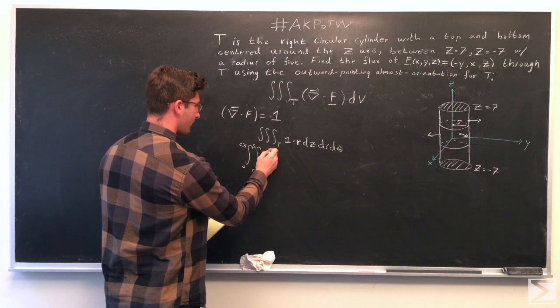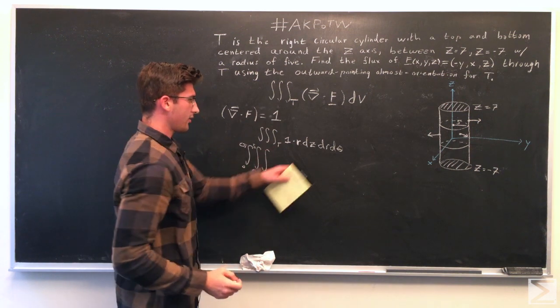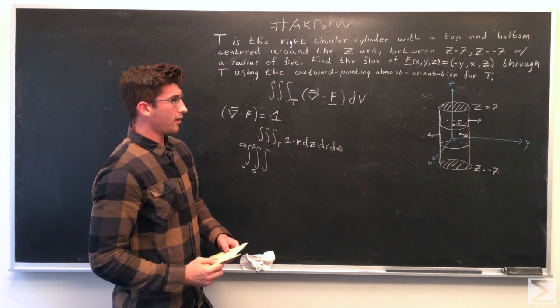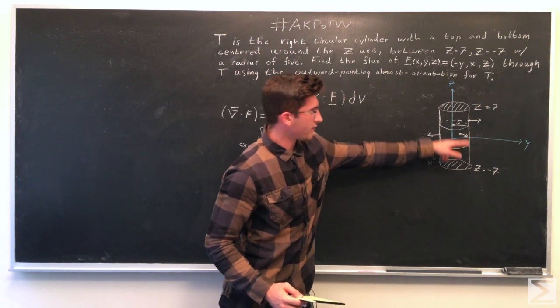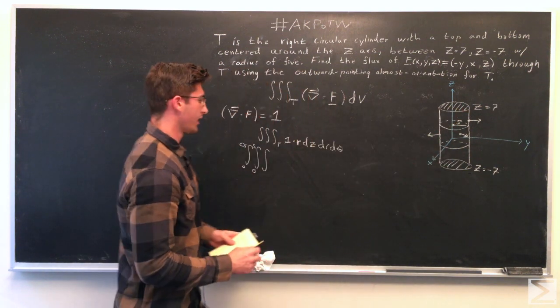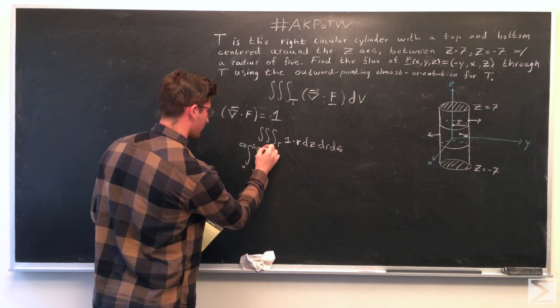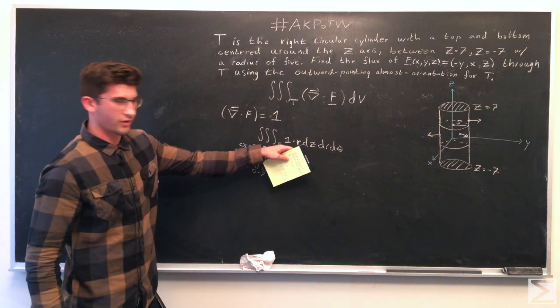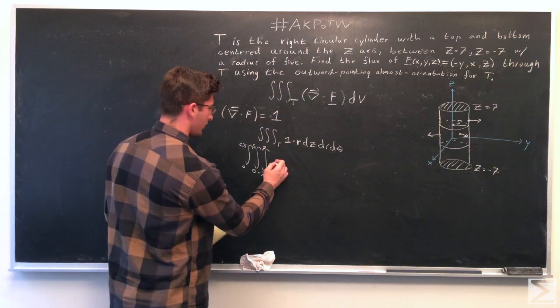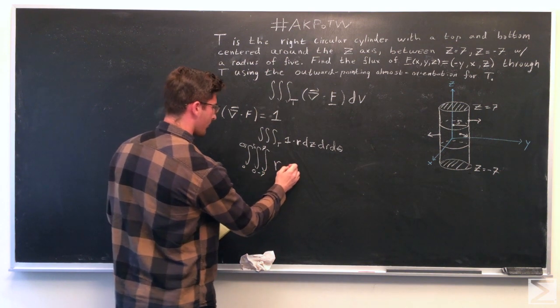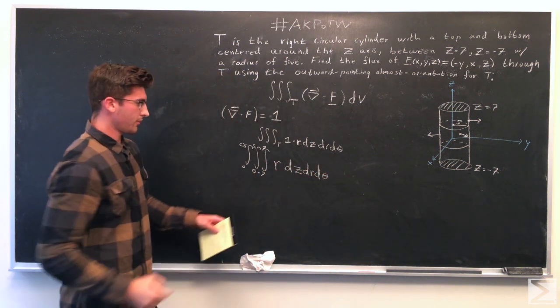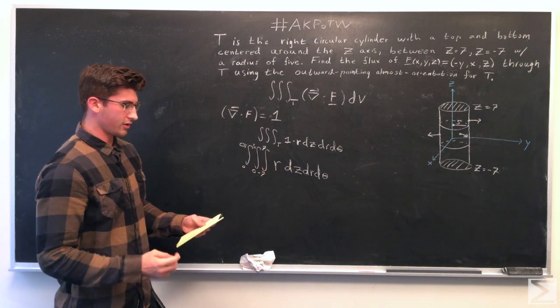And then the inside dz. So the lower bound is negative 7, the upper bound is 7. So from negative 7 to 7. And 1 times r is just equal to r. So I'll just put in r. So here's our region, r dz dr d theta.